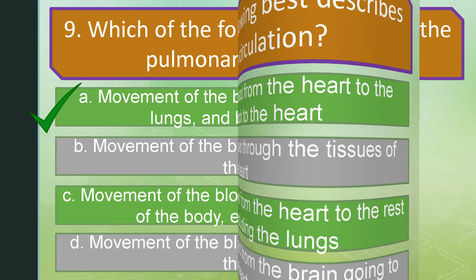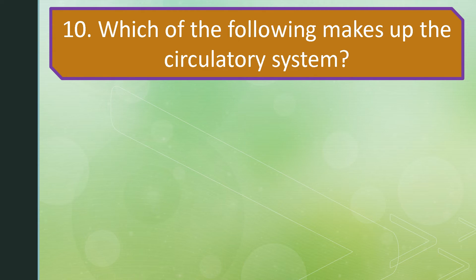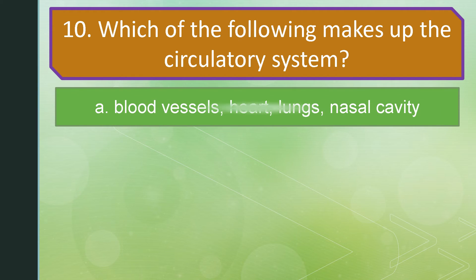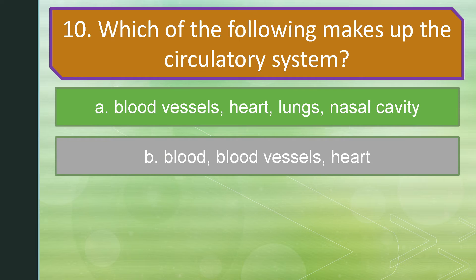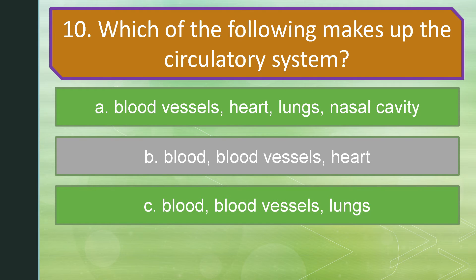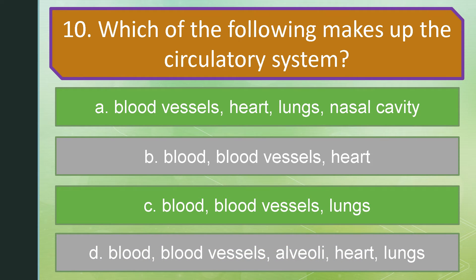Number 10. Which of the following makes up the circulatory system? Is it A: Blood vessels, heart, lungs, nasal cavity? Letter B: Blood, blood vessels, heart. Letter C: Blood, blood vessels, lungs. Or letter D: Blood, blood vessels, alveoli, heart, and lungs. The answer is letter B: Blood, blood vessels, and heart.